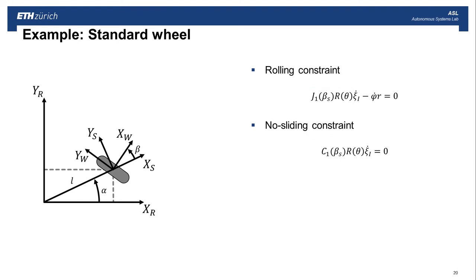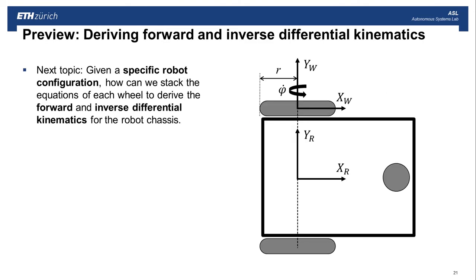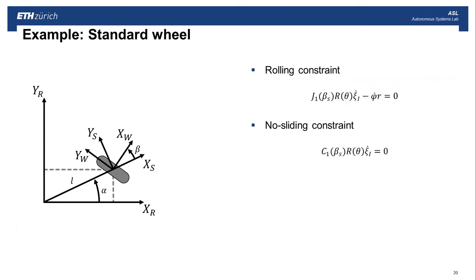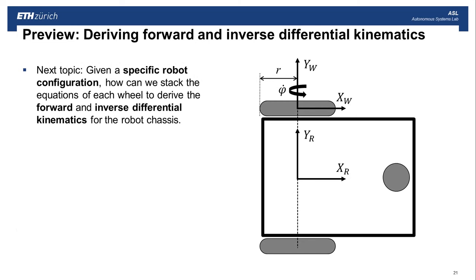For further analysis, we call these component parts by name. The rolling constraint matrix is called J1, made a function of beta so it works for steerable wheels. The constraint matrix is called C1. In a coming segment, we'll look at the properties of these matrices to characterize the types of motions that a specific mobile robot platform is capable of.